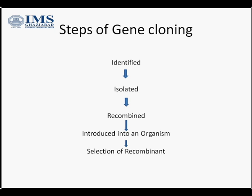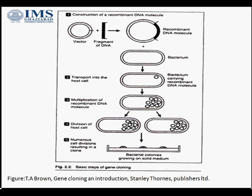Now we come to the basic steps of gene cloning. First, we need to identify the DNA that we want to clone — it has to be isolated from the genetic material. This isolated fragment of DNA is combined with a vehicle which we call a vector, and this vector is introduced into the organism. The next step is selection of the recombinant colony.